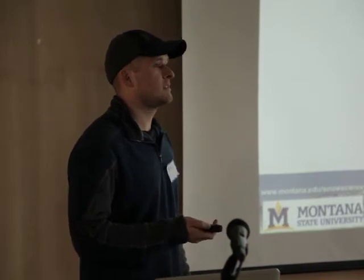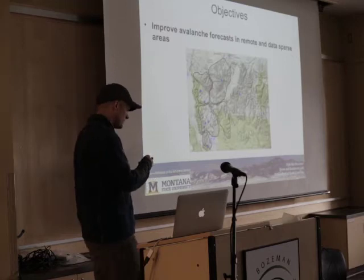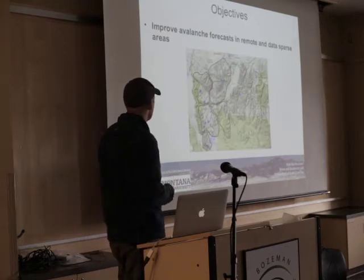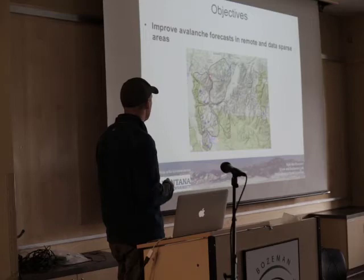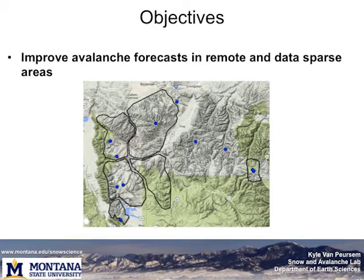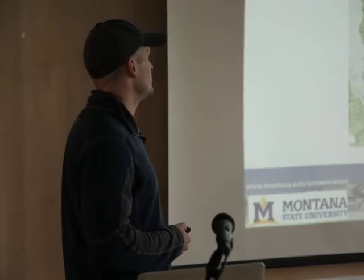When I came into this, I wanted to see how we could improve avalanche forecasting in data-sparse areas — areas that don't have a lot of weather stations or observations. Here's an example: this is the Avalanche Center's forecast region highlighted in black, and these blue dots are all the weather stations available. You can see not a whole lot of coverage — pretty sparse — so there's a lot of educated guessing and still a lot of uncertainty. Using modeling systems can help turn a guess into a more educated guess.